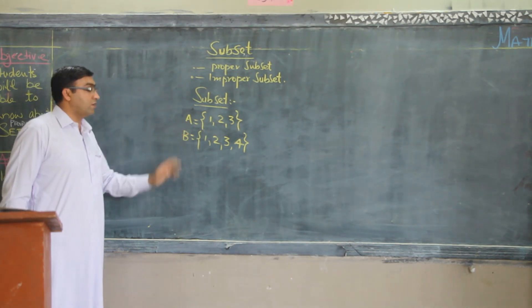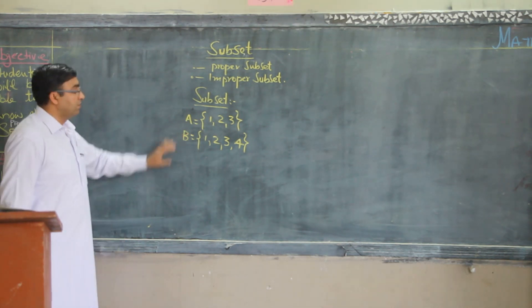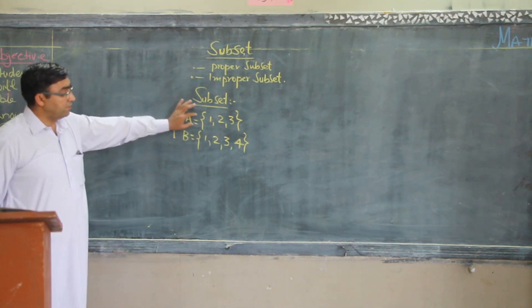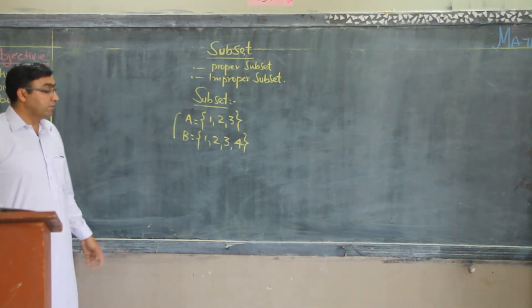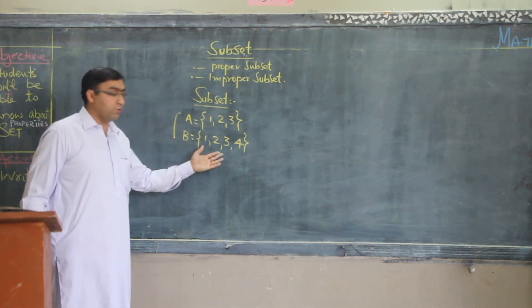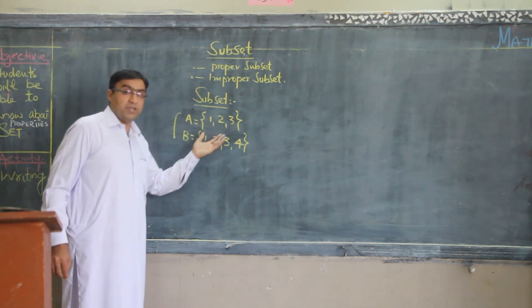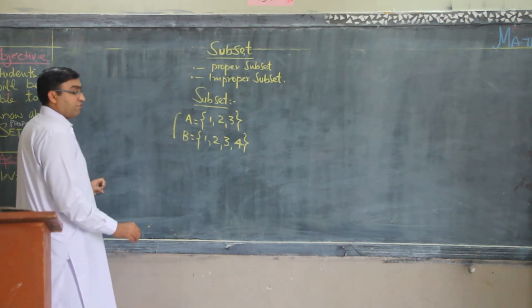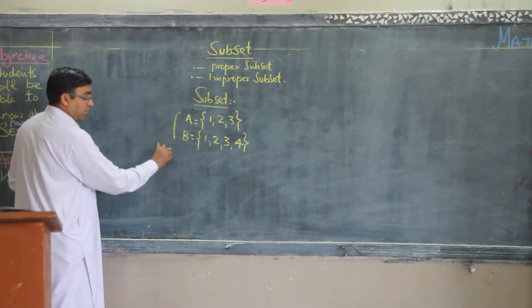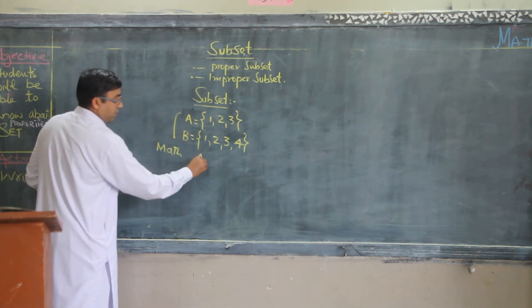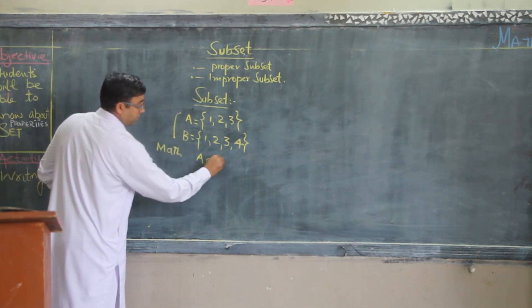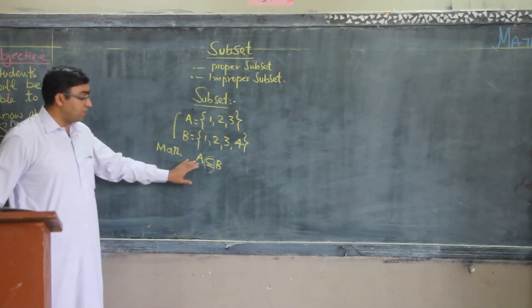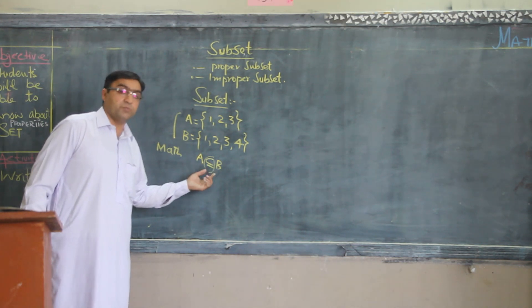So, as we see that A is equal to 1, 2, 3, B is equal to 1, 2, 3, 4. So, all elements of set A exist in set B. So we can say that A is the subset of B. Mathematically, we can write as A is the subset of B. This is the subset of B.